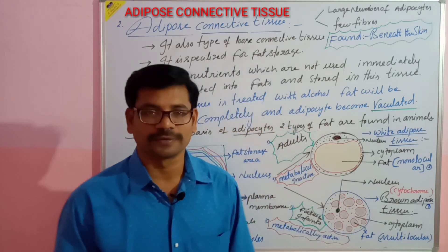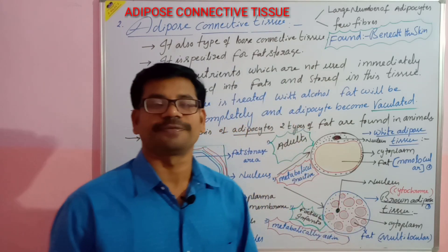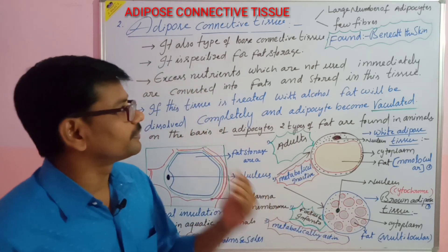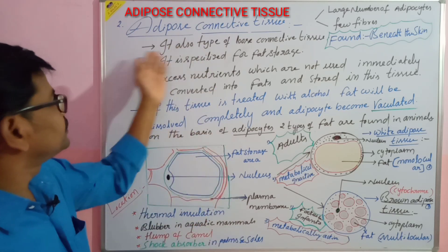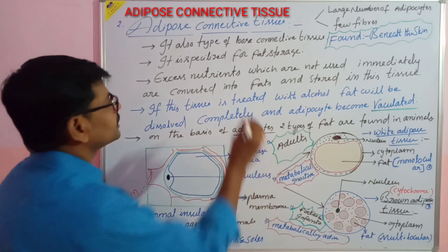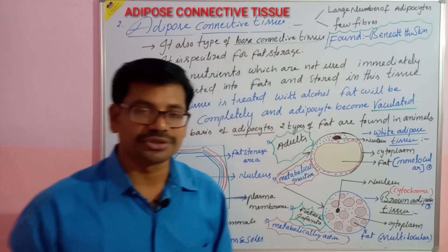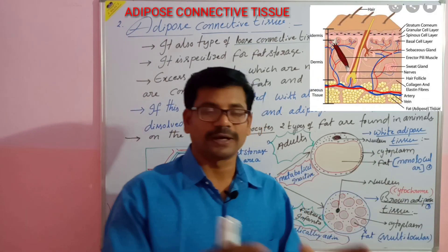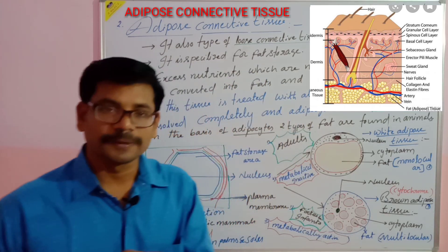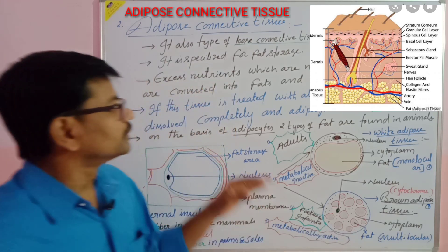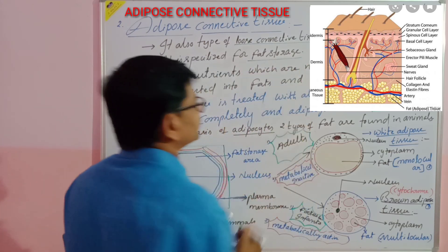Today we are going to talk about the second type of loose connective tissue, which is adipose tissue. It is specialized for the storage of fat. Adipose tissue consists of a large number of adipocytes and a few fibers. It is called a loose connective tissue because large spaces are present, and this tissue is mostly present beneath the skin, in the subcutaneous layer.